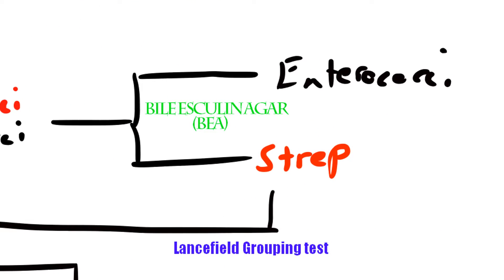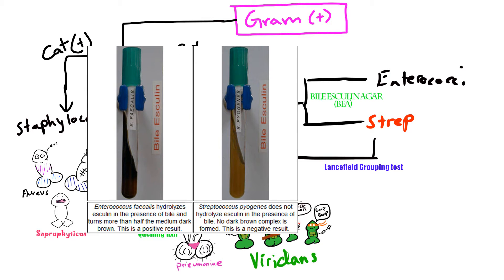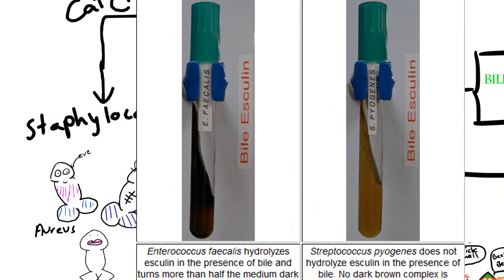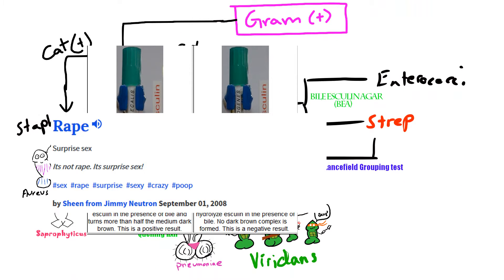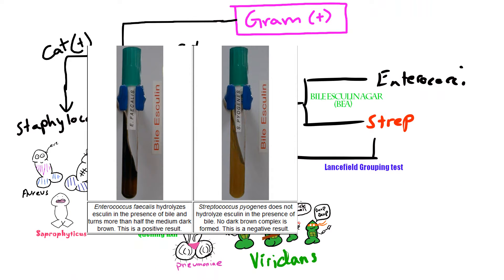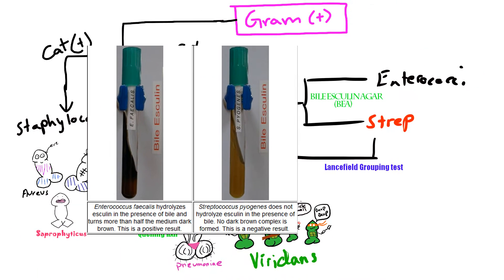We can then use the bile esculin agar, aka BEA, which differentiates Streptococci from Enterococci organisms. BEA contains 4% bile which inhibits the growth of most organisms, along with the glycoside esculin and ferric citrate. If the bacteria can break down esculin into esculetin and dextrose, the esculetin reacts with ferric citrate to produce a charcoal black color. Strep viridans is BEA negative — it can't break down the sugar, so we won't see that black color.